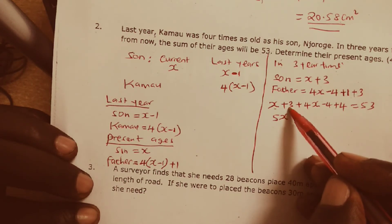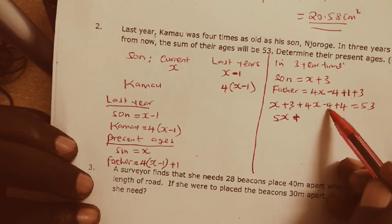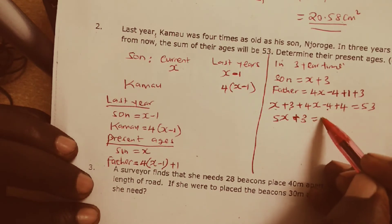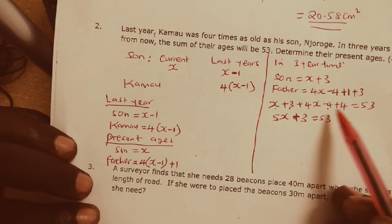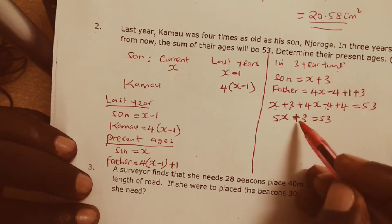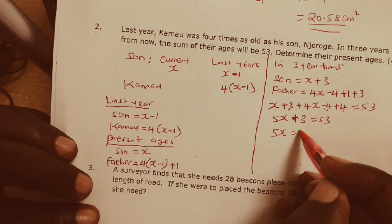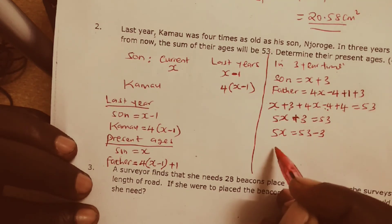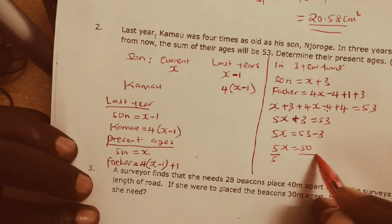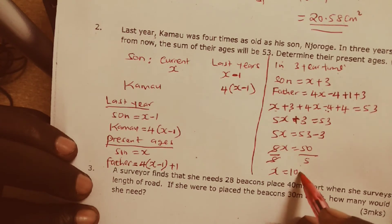3 minus 4 is negative 1. Negative 1 plus 4 will give us positive 3, and this will be equal to 53. Negative 4 plus 4 gives us 0, so we remain with 3. If we take positive 3 to the other side it becomes minus, so 5X is going to be equal to 53 minus 3, and 5X is going to be equal to 50. If we divide by 5 on both sides, X is going to be equal to 10 years.